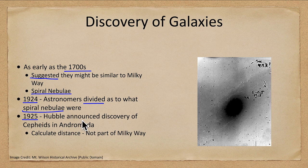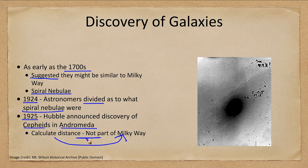In 1925 Hubble announced the discovery of Cepheid variables in Andromeda. That meant he could calculate the distance and found out that they were definitely not part of the Milky Way — they were much too distant.